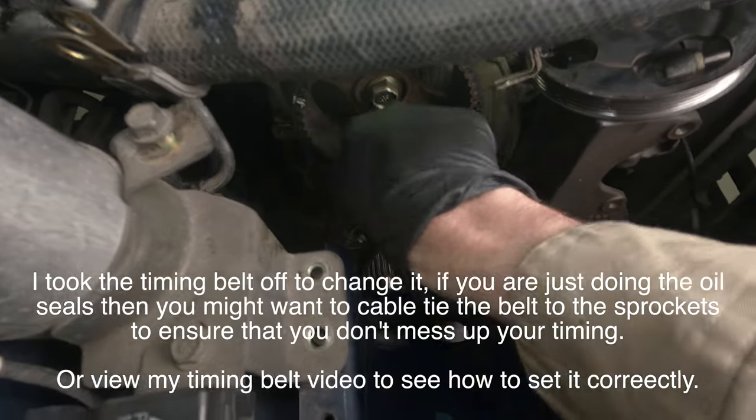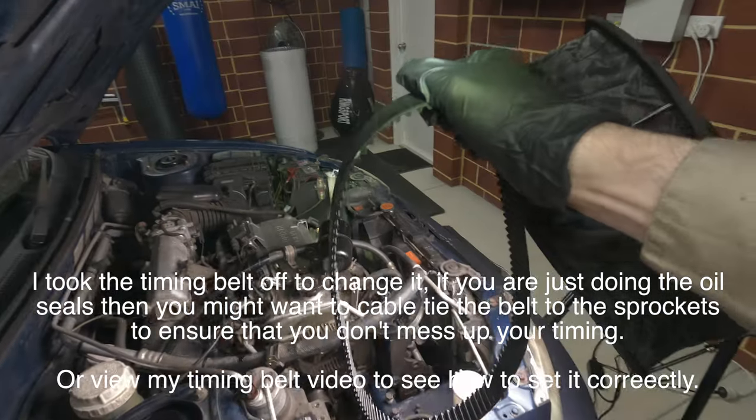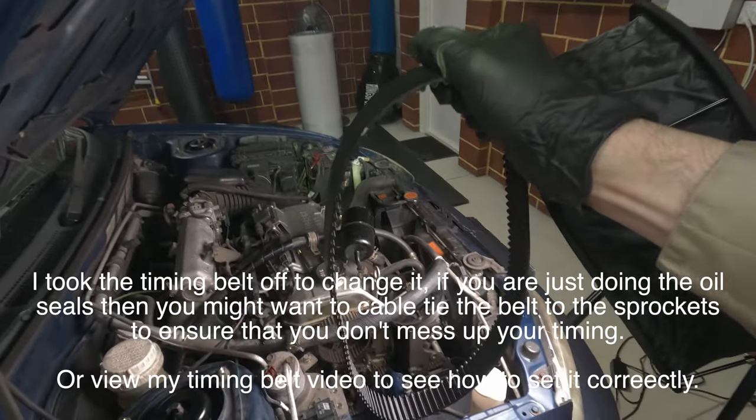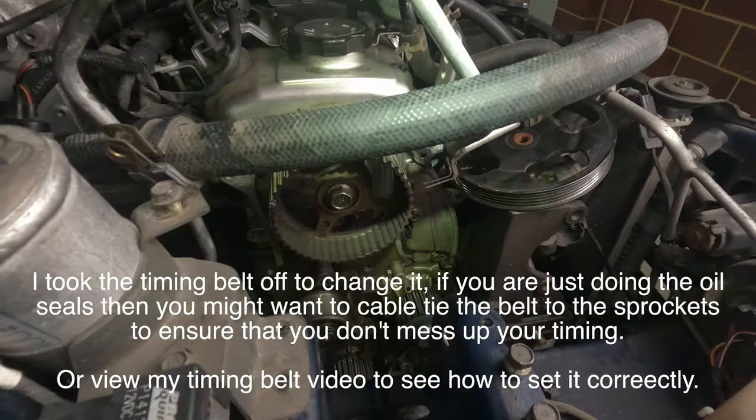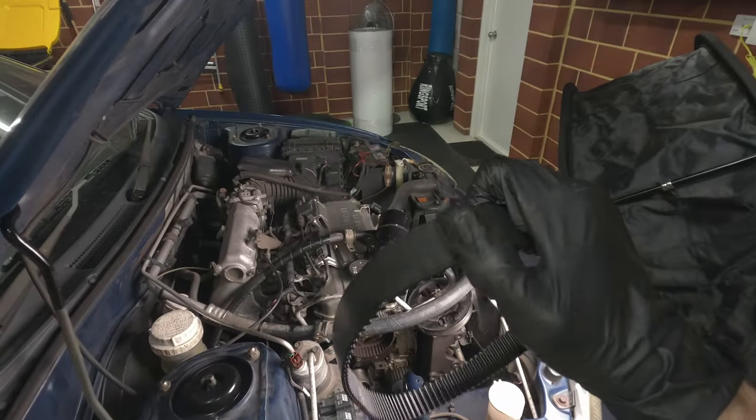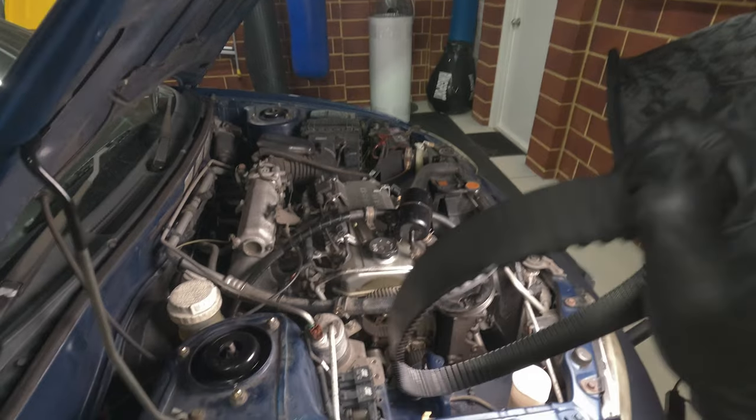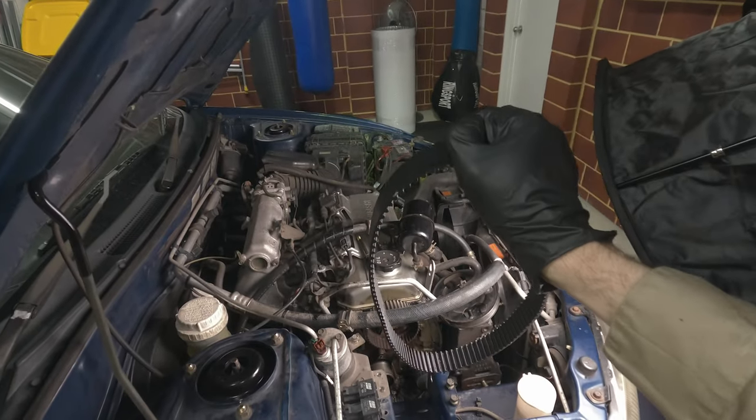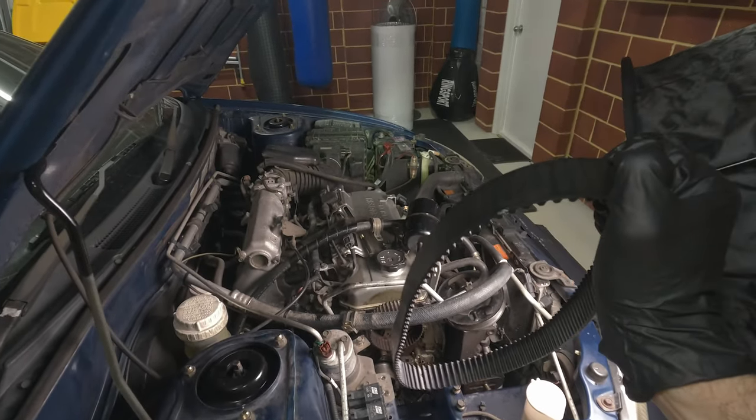All right guys, so the tension is off the timing belt. Now at this stage, if you took your timing belt off to do your camshaft and crankshaft oil seals and you're going to reuse this, just draw an arrow in a white paint pen so you know which direction it went because it's supposed to reinstall in the same direction. Because I'm using a new belt, I'm not going to bother.